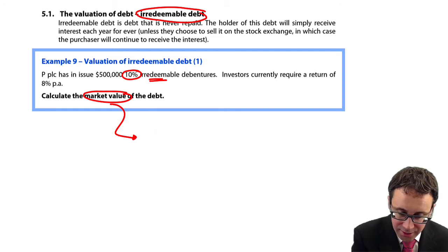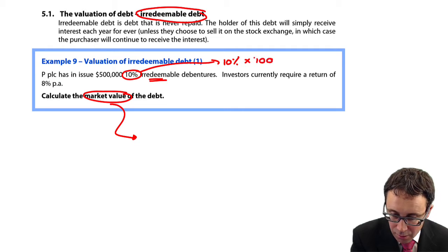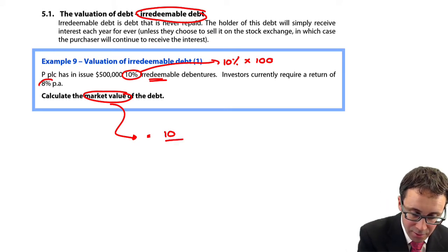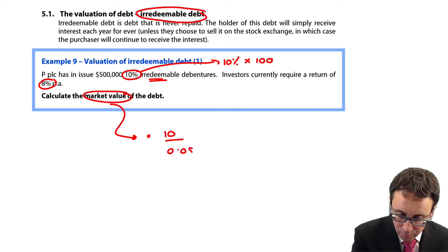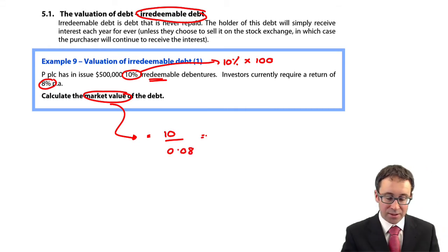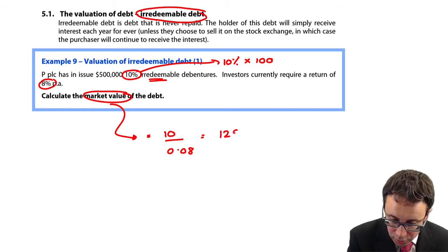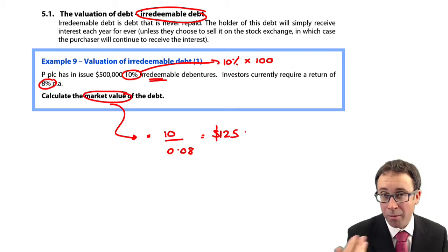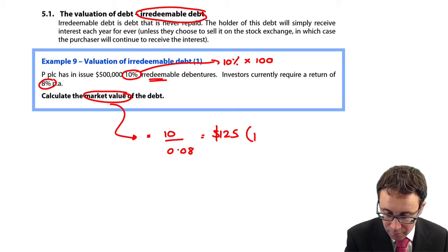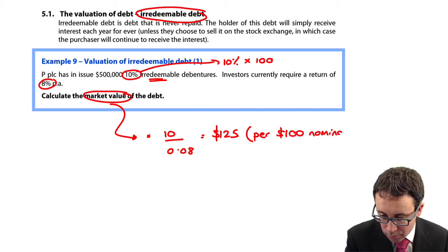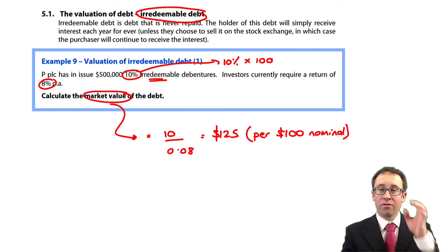To work out your market value, here you have 10% irredeemable debentures. That coupon rate of interest is 10% of your 100, so that's 10%, and then you multiply that by one over the discount rate. The discount rate is 8%, so 10 divided by 0.08 gives you $125 per block of 100, or per $100 nominal value.